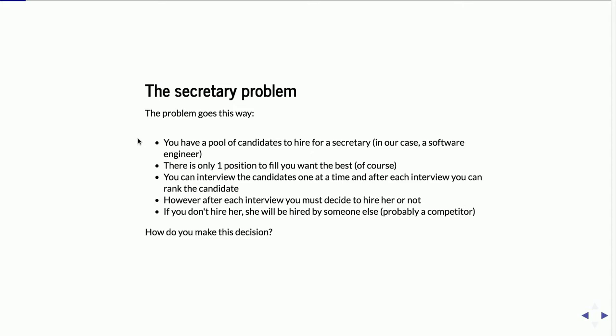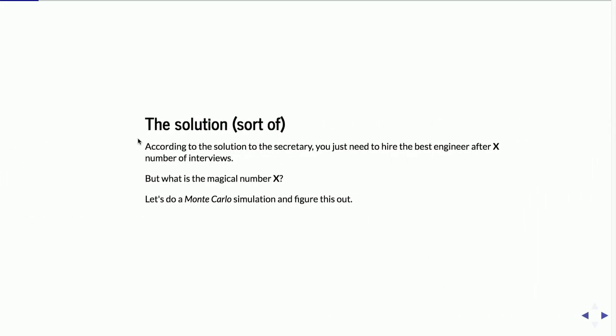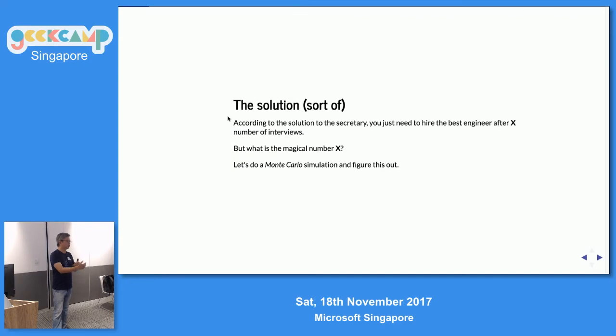So how do you actually make the decision to hire or not hire, and when should you make the decision? There is a solution: you need to hire the best engineer after X number of interviews. You interview X number of engineers, and after that number, you look out for the best engineer you can find. Let's say you interview 10 people — then from the 11th person onwards, the best person you find, you hire that person. That's the solution to the secretary problem.